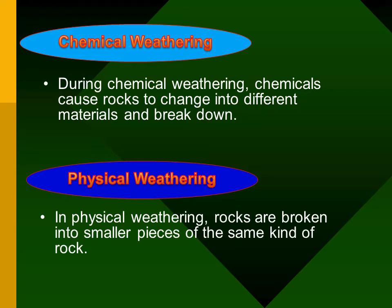Living things also cause weathering. Plants can sprout into the cracks in a rock, and as these plants and their roots get bigger, they can cause the rock to split. So there are two types of weathering: chemical weathering and physical weathering, both involving the breaking down of rock into smaller pieces.